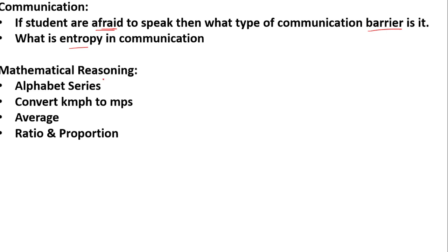If you talk about mathematical reasoning, it was pretty simple. There was an alphabet series question that was very simple to solve. There was a question to convert kilometers per hour to meters per second. There was also a simple question from averages — in the morning shift also, there was a question on average. And in the morning there was a question on ratio, while in the evening there was a question on both ratio and proportion.